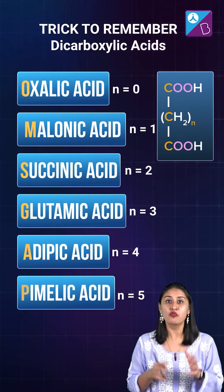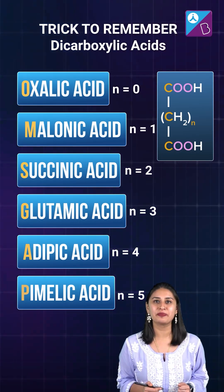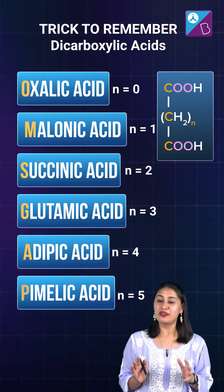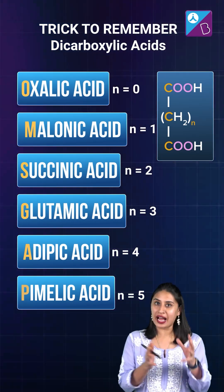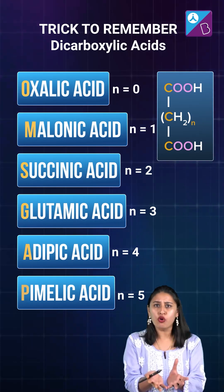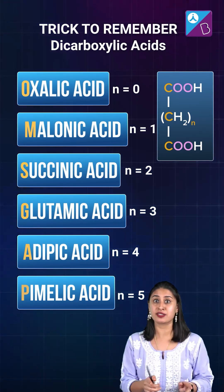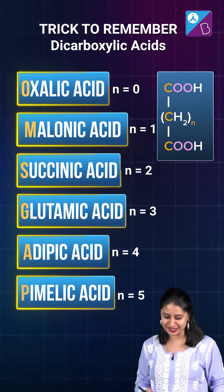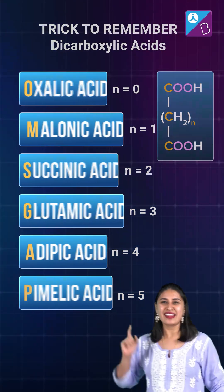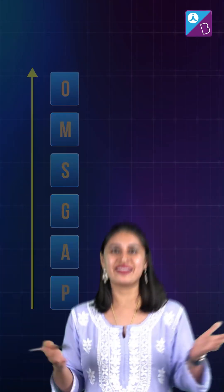And if you are asked what is the acidic strength order, do remember: dicarboxylic acids are usually more acidic than monocarboxylic acids. But amongst these, this becomes the trend.